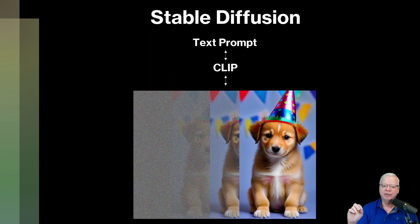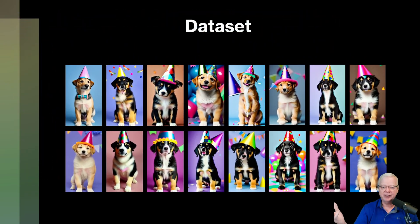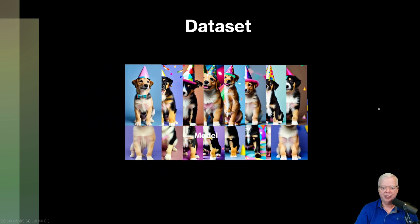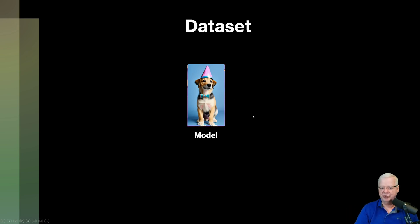Now that we understand what Stable Diffusion is and how CLIP integrates with it, let's go on to some other things. First off, there's the term data set. A data set is a collection of images that are then used to make a model. A model is the base template that you use to create any image.